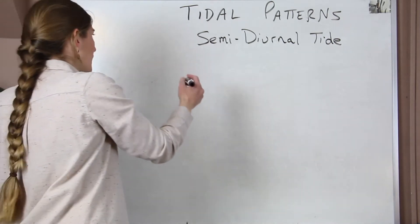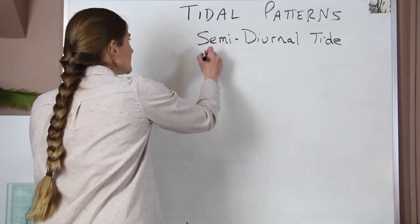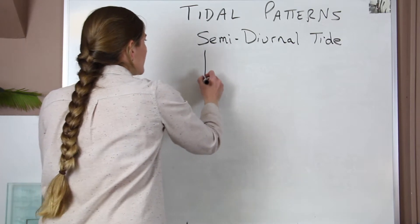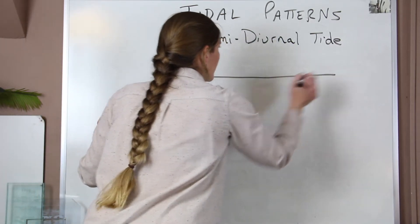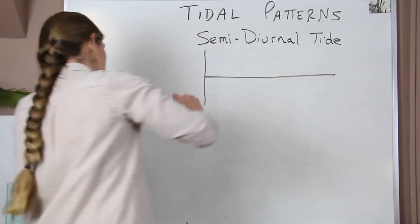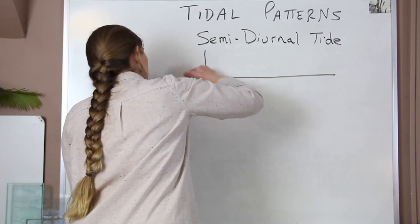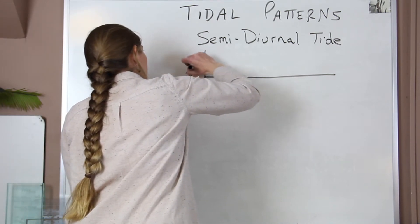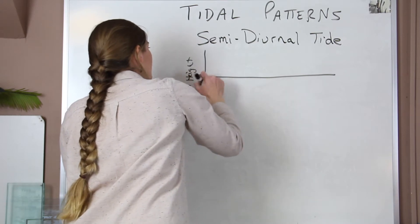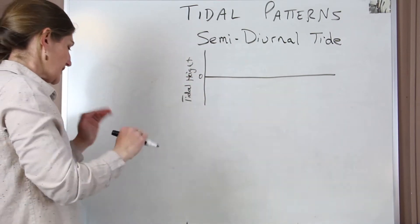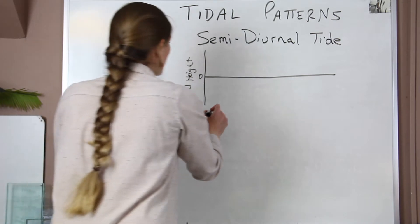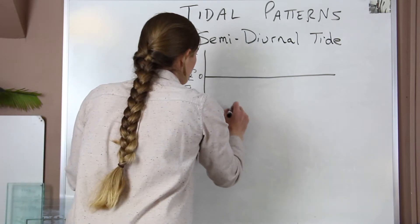So in a semi-diurnal tide, if we were to have a chart to try to show the tidal height, that will be on the side. The line here is at zero, so it's where the tide is stopped, and we're going to show this period over one tidal day.